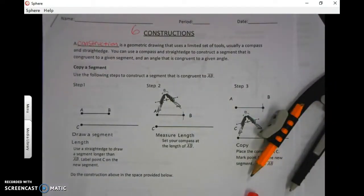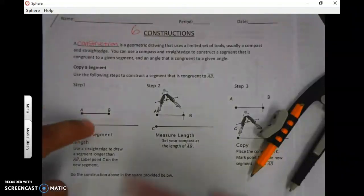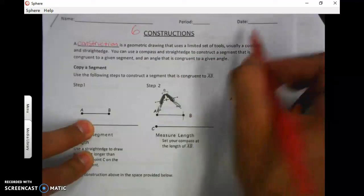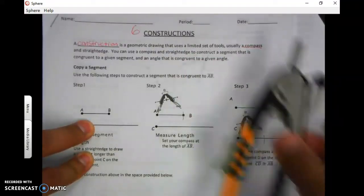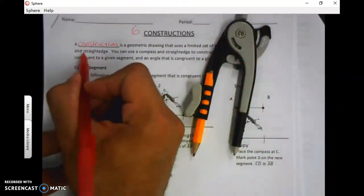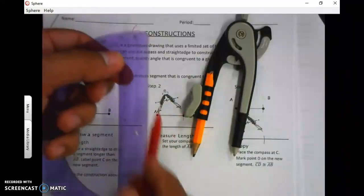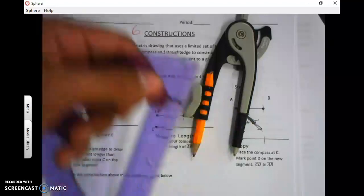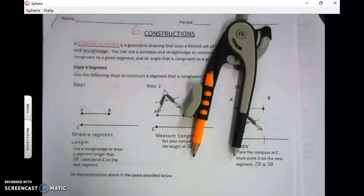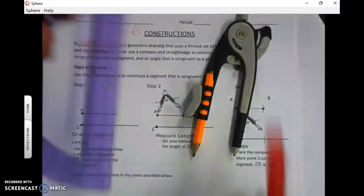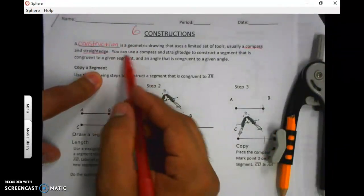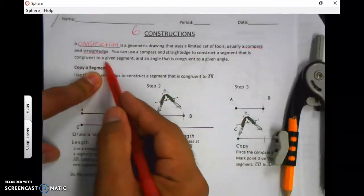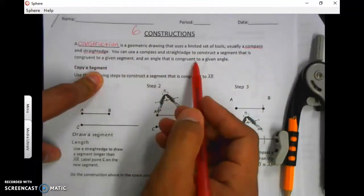So how do you make a construction? If we keep reading, it says it's a geometric drawing that uses a limited set of tools—usually a compass, which is this, and a straight edge, which will be the straight part of this. Could you use a ruler? Sure, you can use anything that's literally straight that will help you make a straight line. Using these two tools, you can do constructions using a compass and a straight edge to construct a segment that is congruent to a given segment and an angle that is congruent to a given angle.